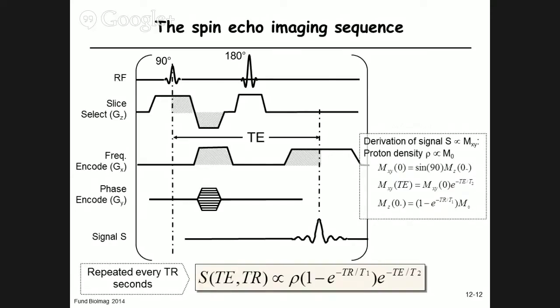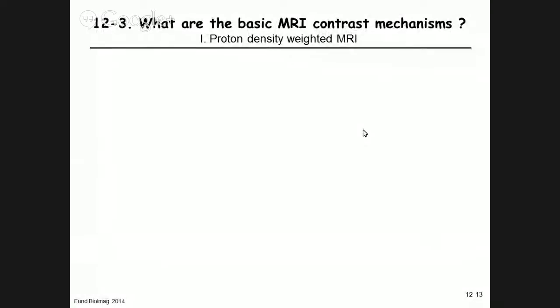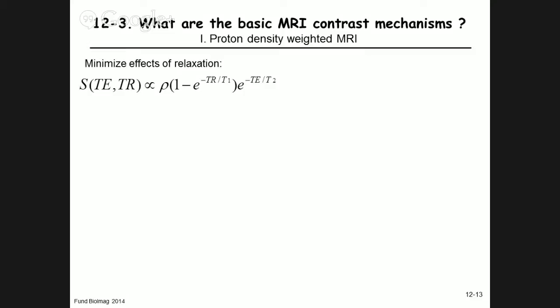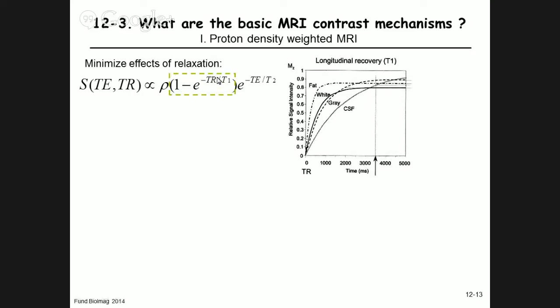That is the operational equation. Now let's go through the different contrast mechanisms. For proton density-weighted MRI, one wants to minimize the effects of relaxation. To minimize T1 effects, choose a long TR — at around 3.5 seconds, white matter, gray matter, CSF, and fat are all pretty much relaxed to equilibrium magnetization. To minimize T2 effects, choose a very short TE — around 10 ms — so that TE/T2 ≈ 0 and this term is close to 1.